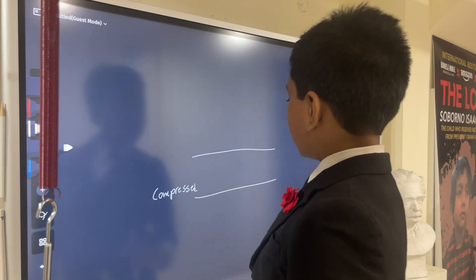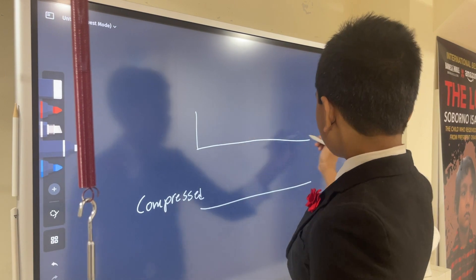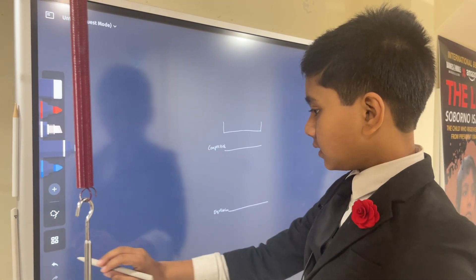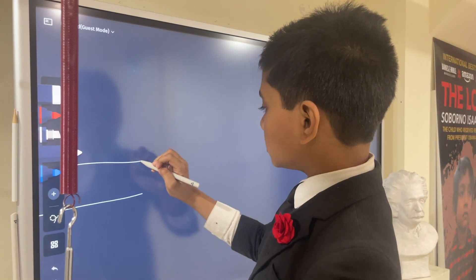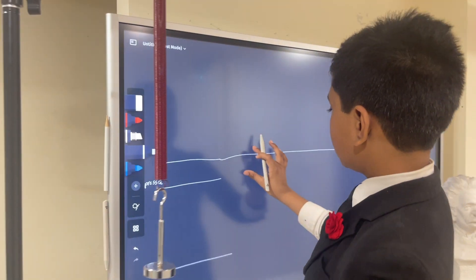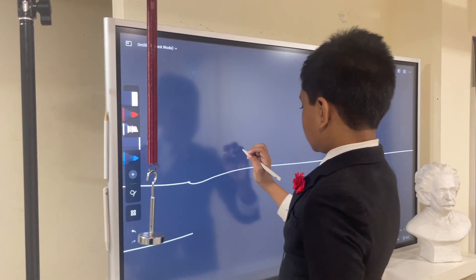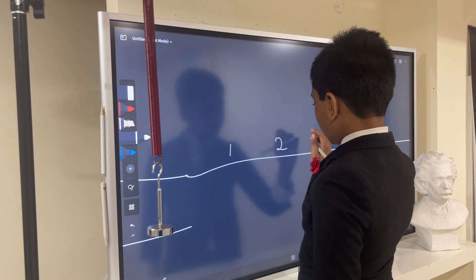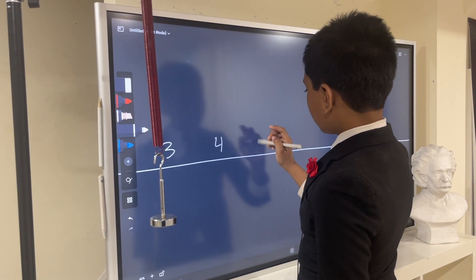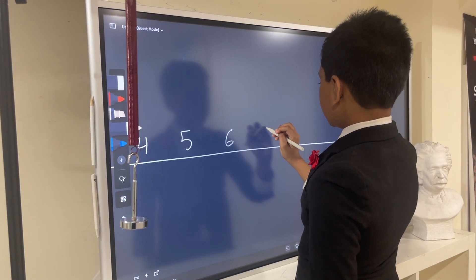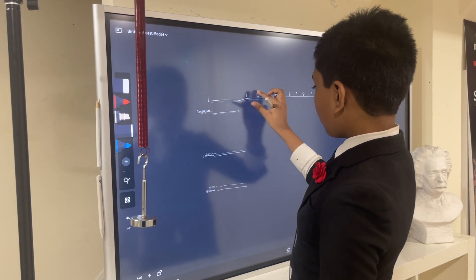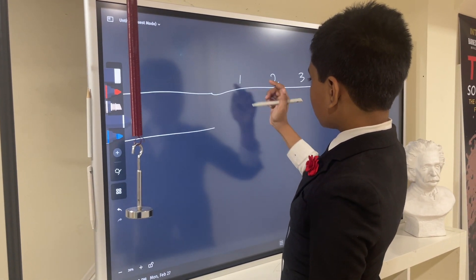Now let's draw a line here where our spring will start from, and we're going to make this a little long because we're going to show three cycles of its oscillation. We're just going to put some different times: one, two, three, four, five, six, seven, eight, and nine.